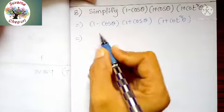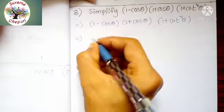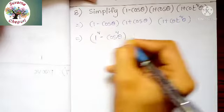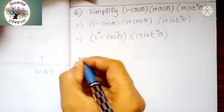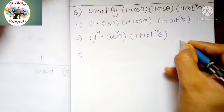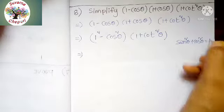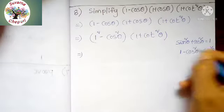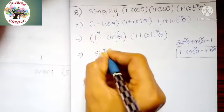How to solve this one? Here it is in the form of A minus B into A plus B. The answer is A squared minus B squared. So 1 squared minus cos squared theta, into 1 plus cos squared theta. By using trigonometry, sin squared theta plus cos squared theta equals 1, so 1 minus cos squared theta equals sin squared theta. Substituting: 1 minus cos squared theta means sin squared theta.